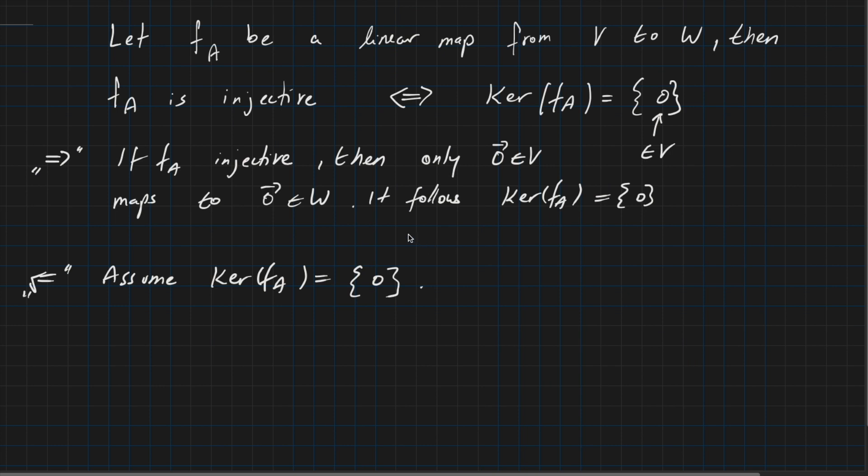So now for injectivity we are looking into FA(x) = FA(y) for some x, y from the vector space V. And if we want to prove that FA is injective, then as always for injectivity we want to conclude that from this equality it follows x = y. We don't know whether this is true now, but this is our goal here.